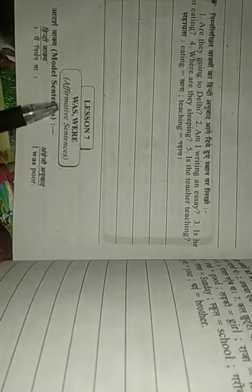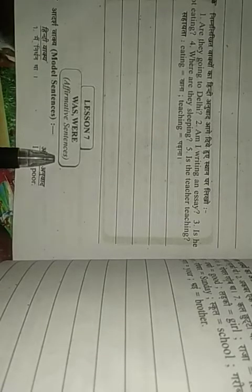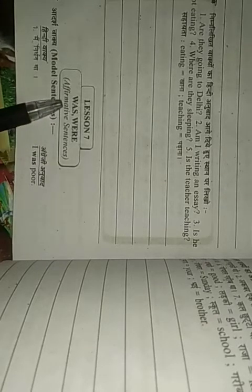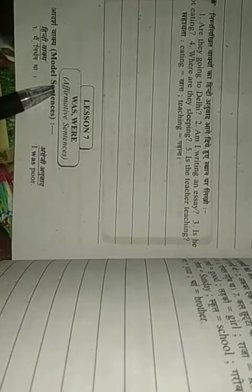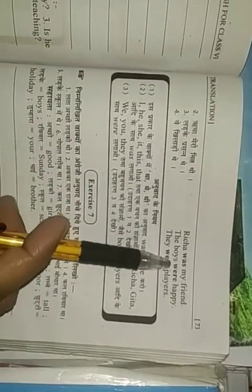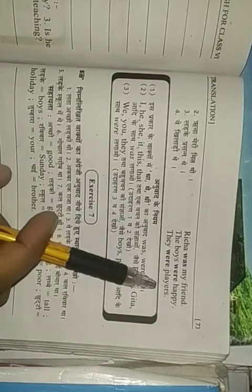One of them is affirmative sentence, second, negative sentence, and interrogative sentence. Under this lesson, Lesson number 7 tells us about the use of was in the sentences of affirmative. And you have read model sentences: I was poor, Richa was my friend, the boys were happy, they were players.